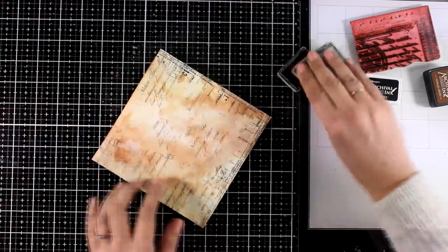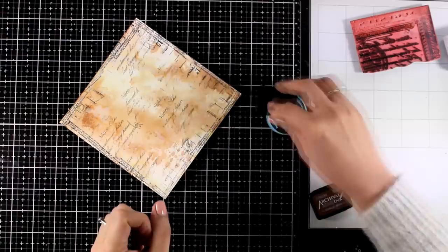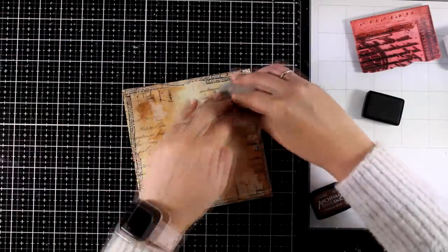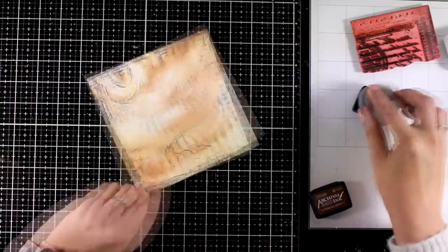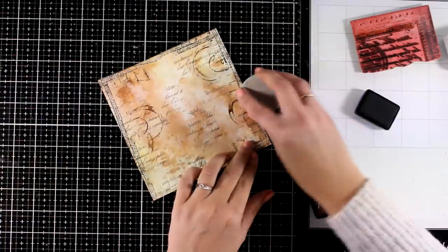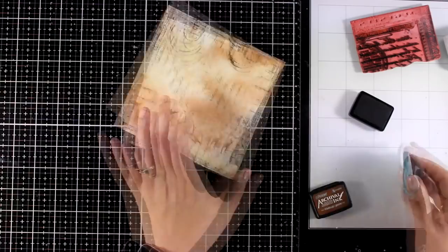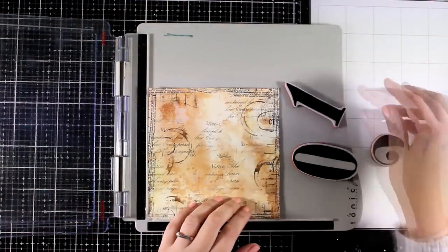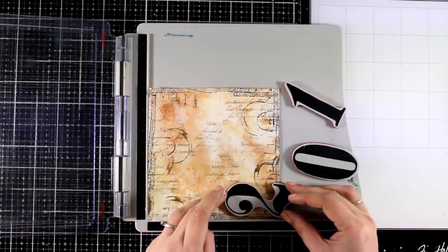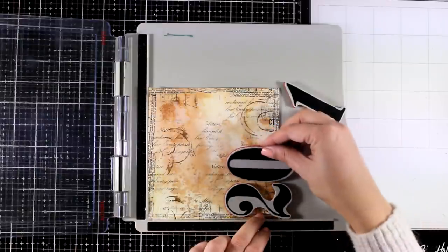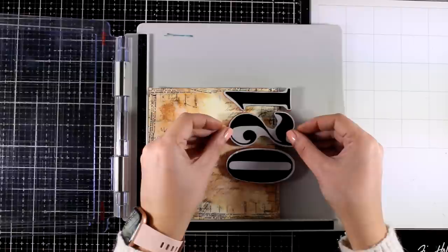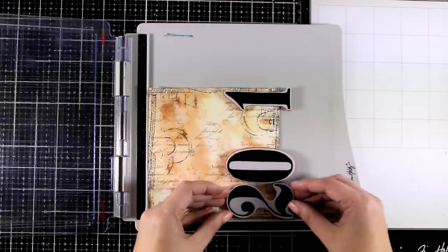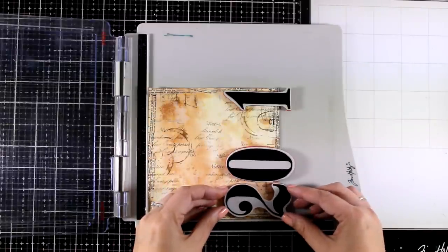I also grabbed this coffee stain stamp that I've had for ages. It is one of my favorites, and I'm going to stamp a few times again by using brown Archival ink. And then as this is my last project for this Christmas countdown, I decided to add 2021 on one side of my page. So I'm going to stamp with these big numbers. This is a very old stamp set that I've had for ages.